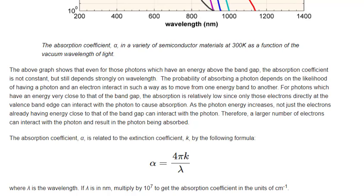As the photon energy increases, not just the electrons already having energy close to that of the band gap can interact with the photon. Therefore, a larger number of electrons can interact with the photon and result in the photon being absorbed.